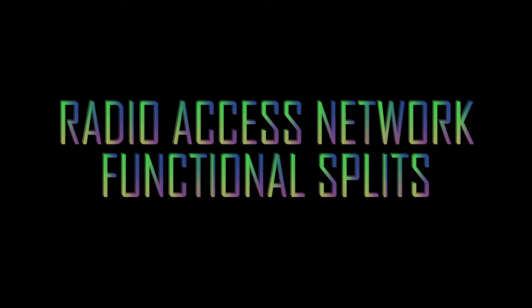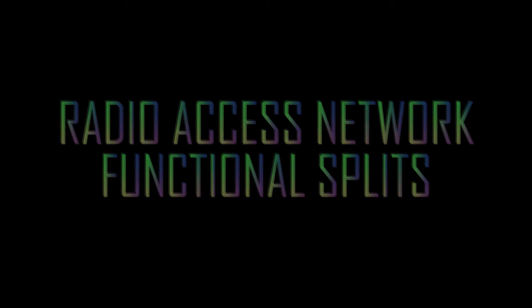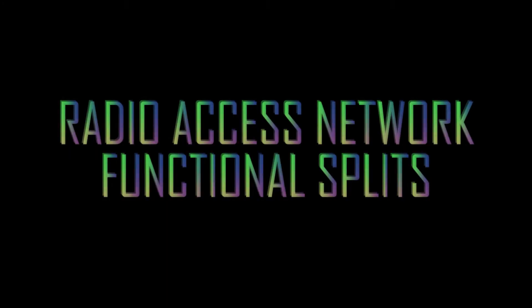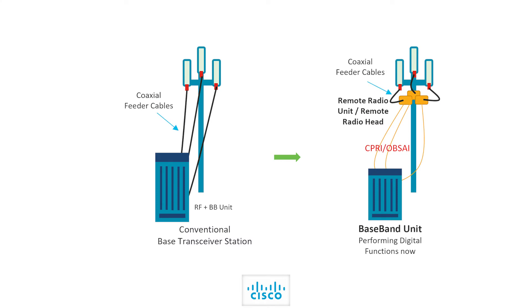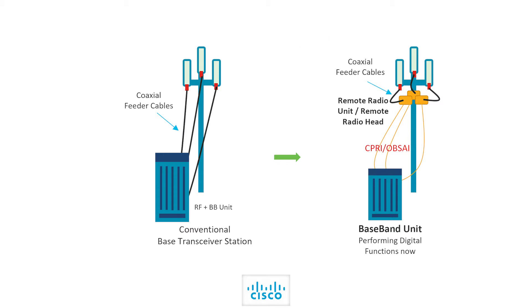Today we'll talk about radio access network functional splits. Though most of our focus will be on 4G/LTE and 5G/NR, functional split is not a recent concept. Close to 20 years back when we moved from a 2G to a 3G base station, we disaggregated the radio functionality at a cell site and broke one unit into two: namely the radio unit and the baseband unit.